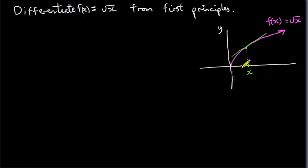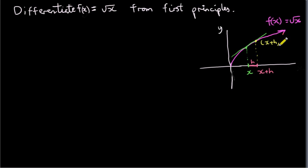By first principles, what we do is we consider a point close to x on our x-axis, a point that's a distance of h from x. I'm going to exaggerate it a bit here — I've put x plus h a bit far from x, but the distance between these points is just h. We evaluate the function at x plus h. So the coordinates of this point will be x plus h comma the square root of x plus h, taking the positive square root.